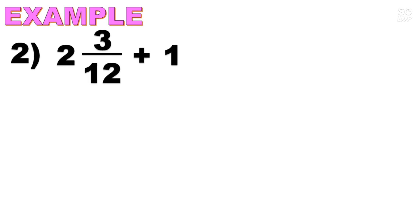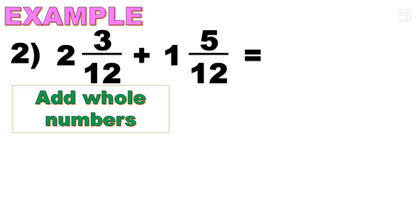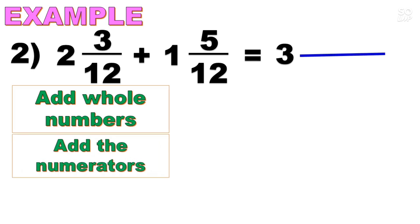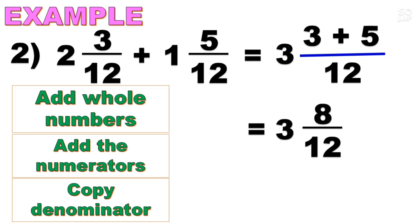Next, example number 2: 2 and 3/12 plus 1 and 5/12. Observe the mixed numbers — the two proper fractions 3/12 and 5/12 have the same denominator, which is 12. So again, we add the whole numbers 2 and 1: 2 plus 1 is 3. Then we add the numerators 3 and 5, giving us 3 plus 5. Then copy the denominator, which is 12. So now we have 3 and 3+5 over 12. Simplify: we have 3 and 8/12.